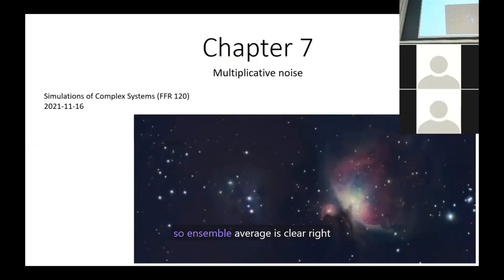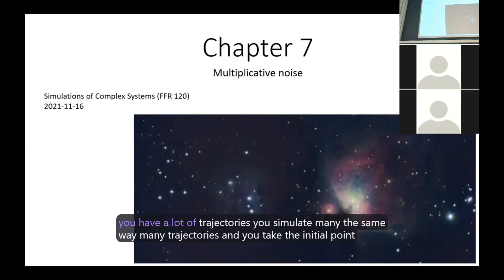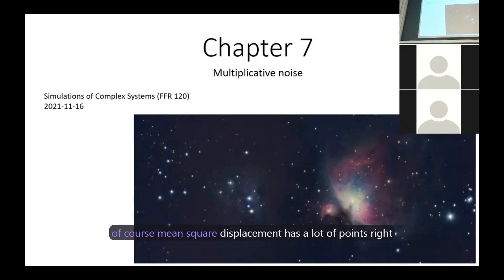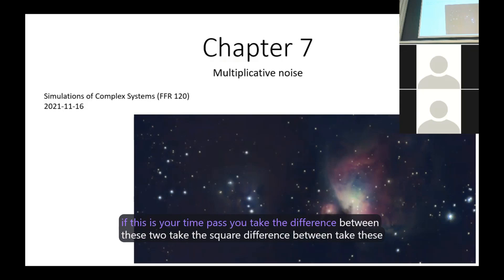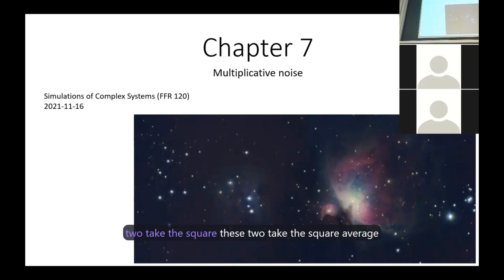Среднее значение ансамбля ясно, не так ли? У тебя есть много траекторий, ты моделируешь многие из них одним и тем же способом и берешь начальную точку. Среднеквадратичное смещение имеет много точек — это зависит от того, сколько времени прошло. Ты берешь разницу в квадрате между двумя значениями, и это среднее по ансамблю.